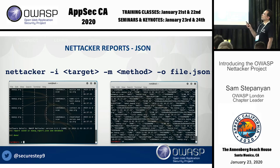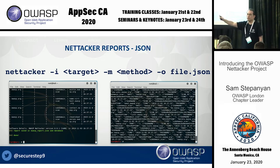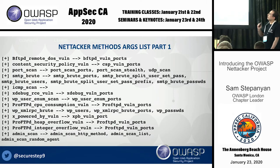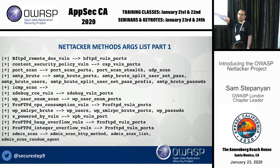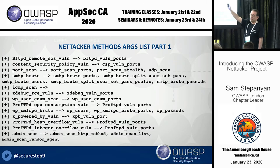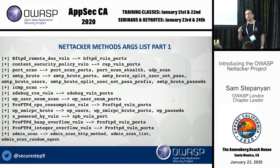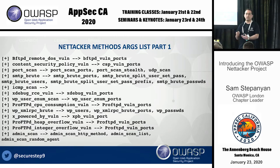To get JSON output, add dash-O on the command line and specify the filename of your report. You can also provide extra parameters to each method — for example, which ports to scan, which passwords and users to use for brute forcing. There are lots of options for every single module, all documented on the wiki. For example, when doing a server version or x-powered-by scan, by default it only scans ports 80 and 443. If you have web servers on port 8000 or 9000, you can add those ports as additional options.